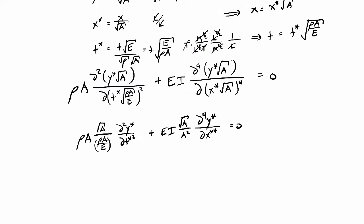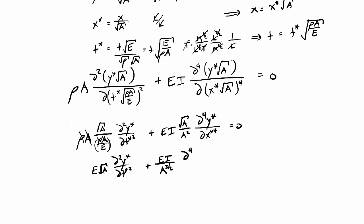Now let's simplify these terms. You'll see that the density and an area drop out on the first one, so I'm left with E times the square root of A times d² y* over d(t*)². On the second term, we have a square root of A in the numerator and an A squared in the denominator, so this will be E times I all over A to the three-halves.